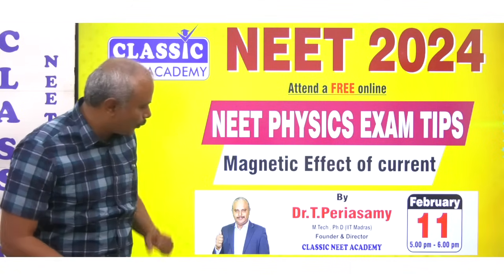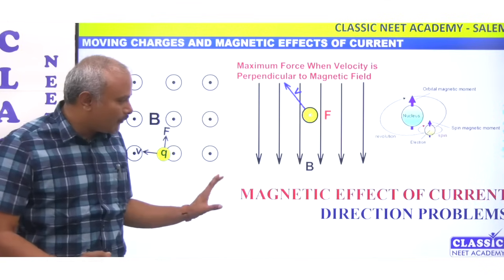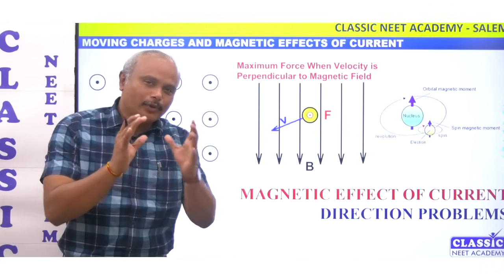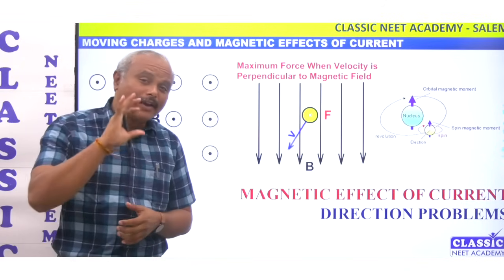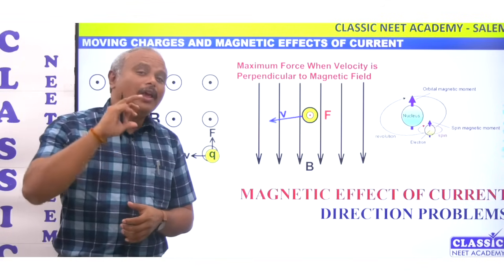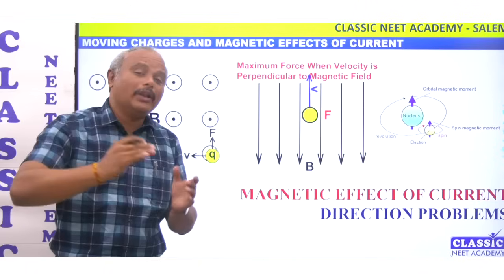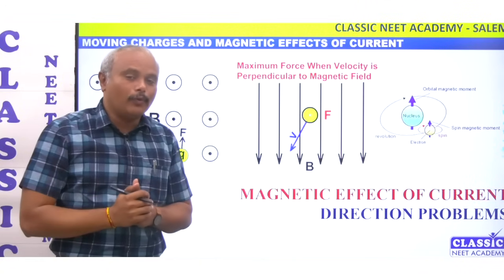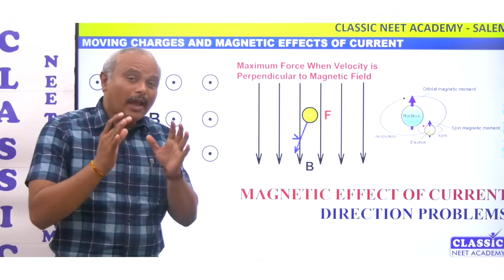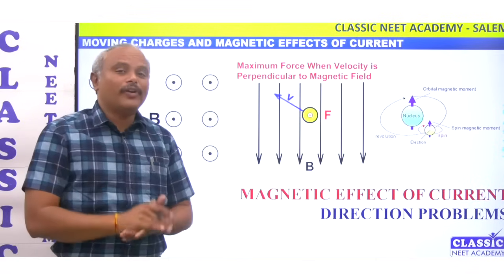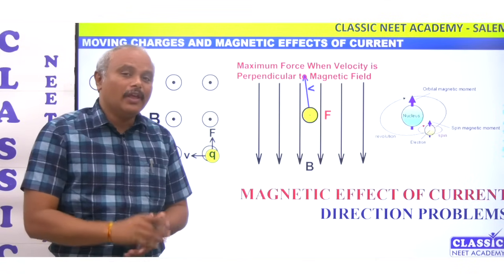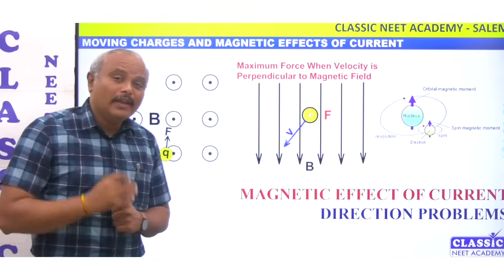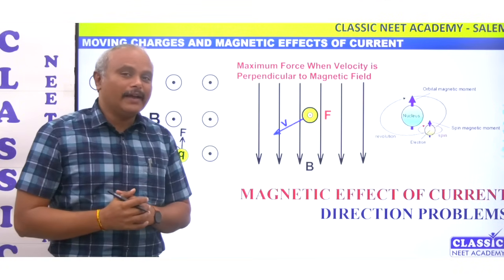What is this class? It covers Magnetic Effects of Current, where directions are very important. How can a current-carrying straight wire create effects? How can a coil create a magnet? If you look at this, you can get confused about directions.